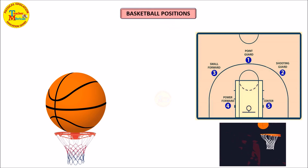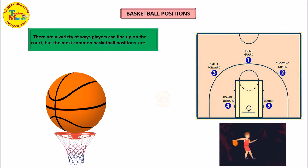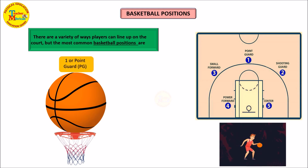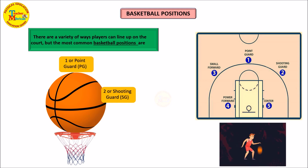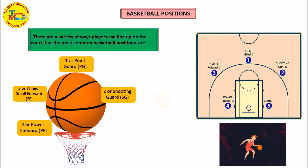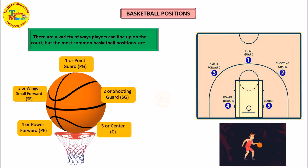Basketball positions. There are a variety of ways players can line up on the court, but the most common basketball positions are: 1 or Point Guard (PG), 2 or Shooting Guard, 3 or Small Forward, 4 or Power Forward, and 5 or Center.